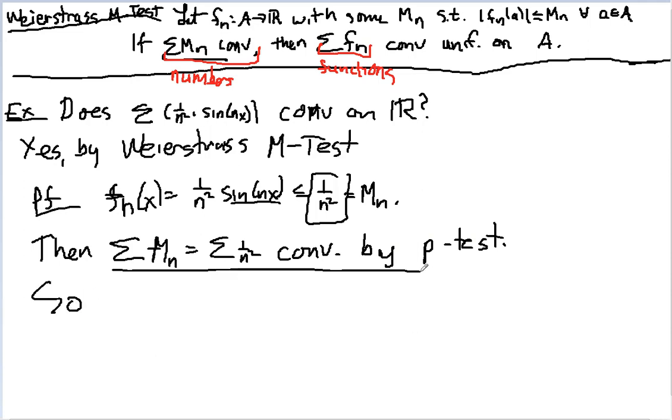So, since we know that this converges, I know that 1 over n squared times sine nx converges by, I love saying this, I love writing this, the Weierstrass M-Test.